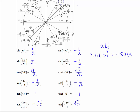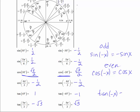For cosine: when we replace a positive angle with its negative, we get the same exact value, meaning the cosine of negative x equals the cosine of x — so cosine is an even function. For tangent: the tangent of a positive angle and the tangent of the corresponding negative angle are opposites in both cases, so the tangent of negative x equals the opposite of the tangent of x, making tangent an odd function.